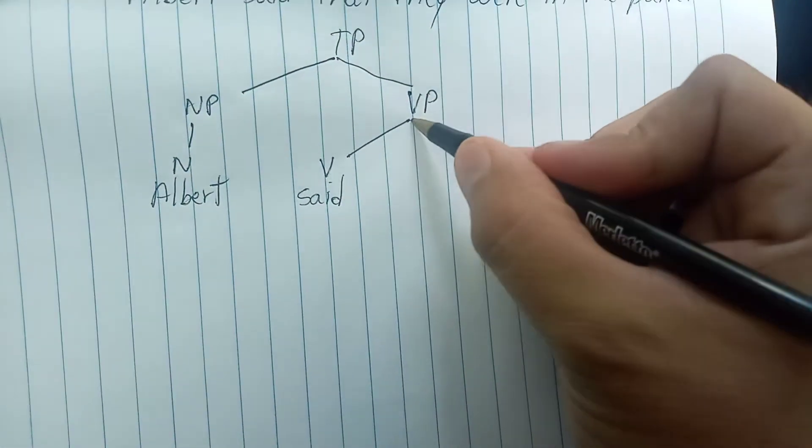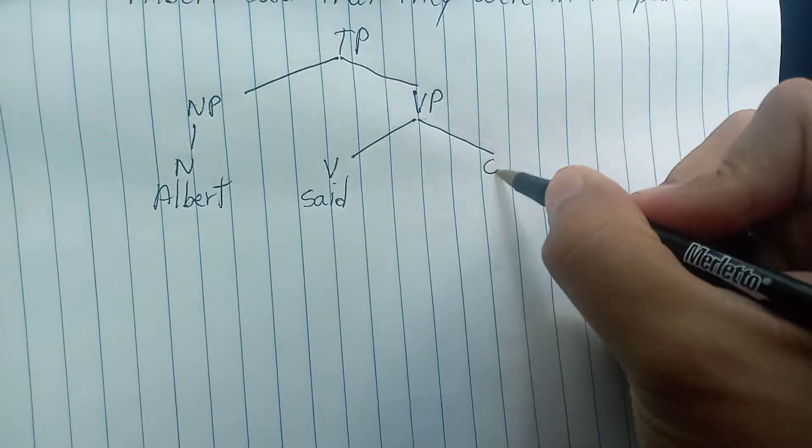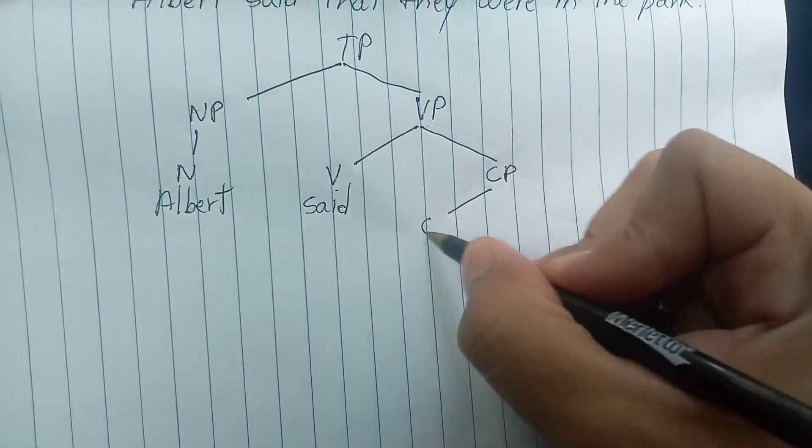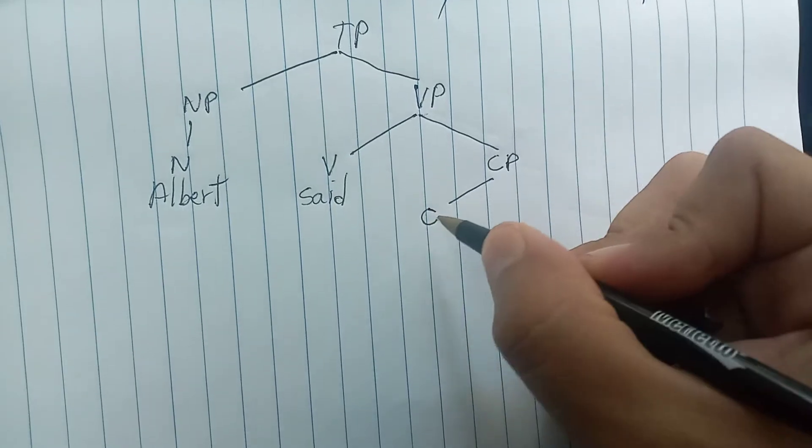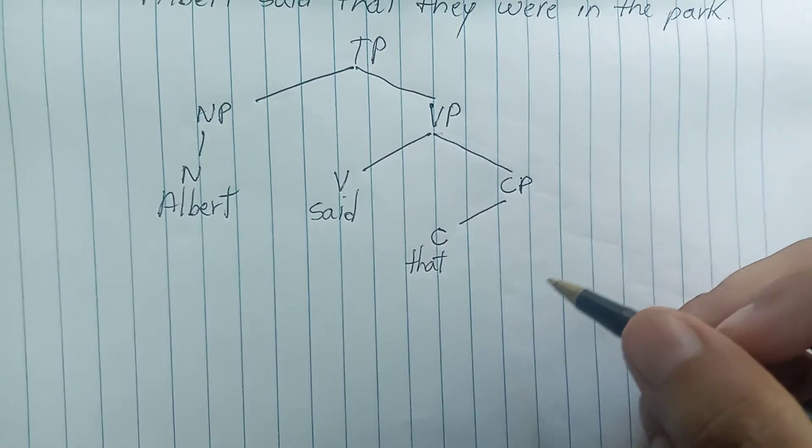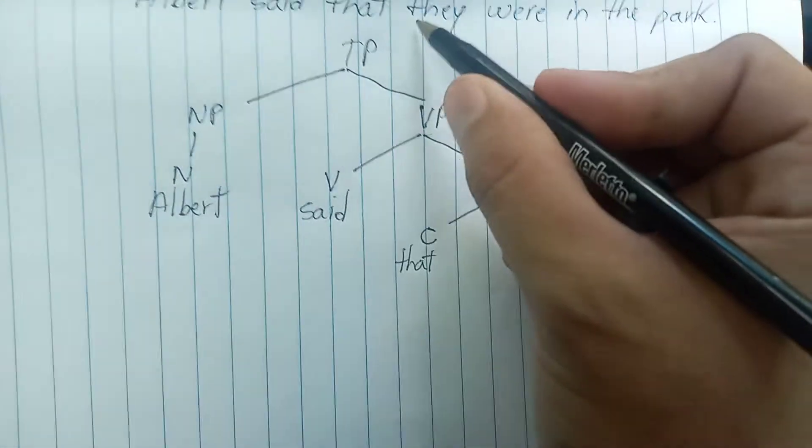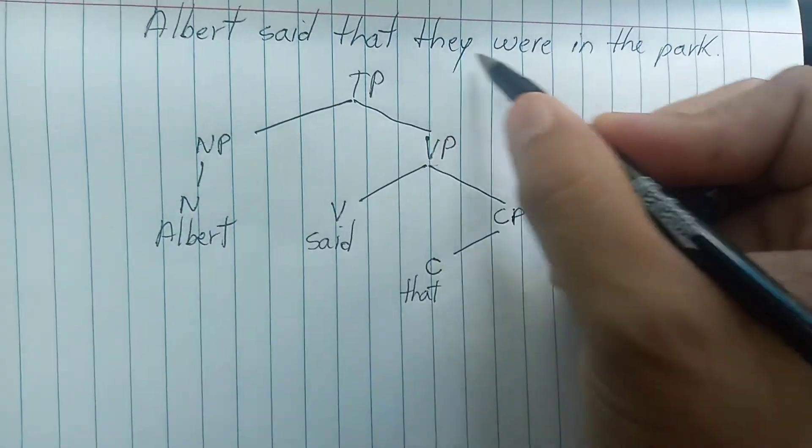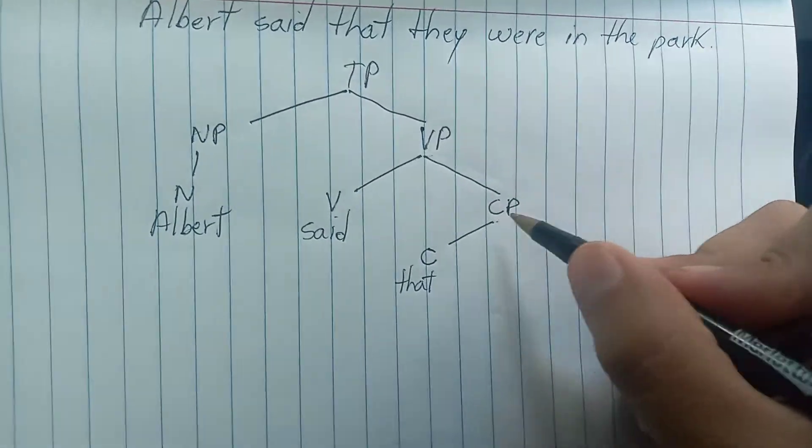Then we have the complementizer that, so we have to draw another line and write CP. This C refers to the complementizer that. After that we have another tense phrase, they were in the park.